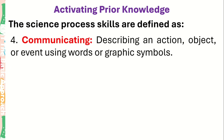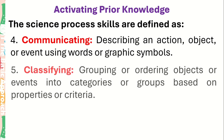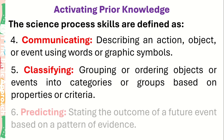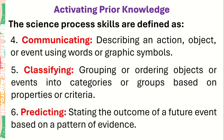Number 4 — Communicating: describing an action, object, or event using words or graphic symbols. Number 5 — Classifying: grouping or ordering objects or events into categories or groups based on properties or criteria. Number 6 — Predicting: stating the outcome of a future event based on a pattern of evidence.